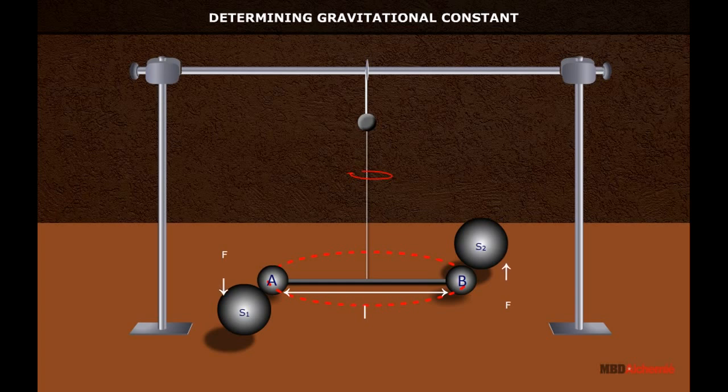This twists the suspended wire through some angle theta. However, a restoring torque of the wire also comes into play, which opposes the twisting of wire from its equilibrium position.